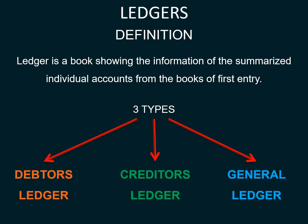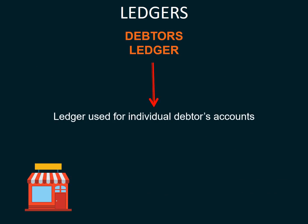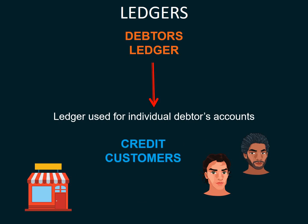The debtor's ledger is a ledger used for individual debtor's accounts. Our debtors are customers that pay us with credit, or buy goods on credit and pay later. They are our credit customers, which do credit sales.